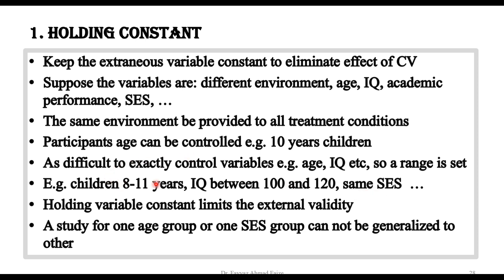In this way we can control some variables, but the disadvantage is that when we hold variables constant, it limits the external validity — it weakens the external validity of the experiment. For example, if you took children aged 8 to 11 years in your experiment, it means the results of that experiment may not be valid for age groups outside that range, and the results could be different there.